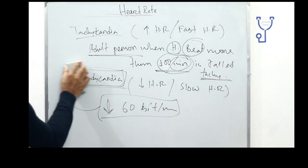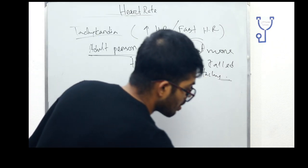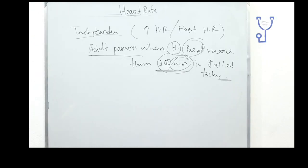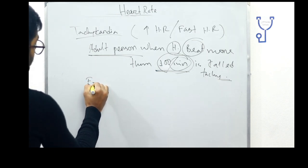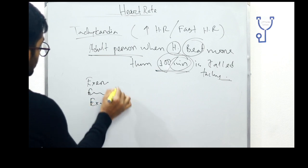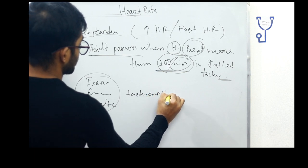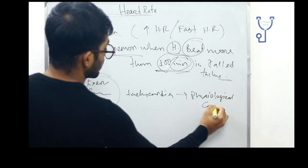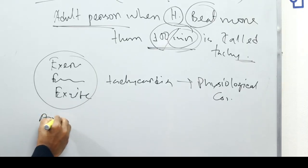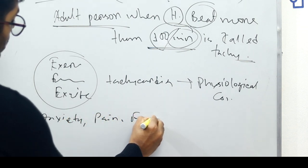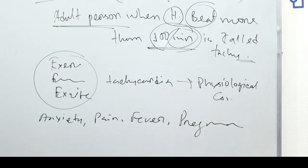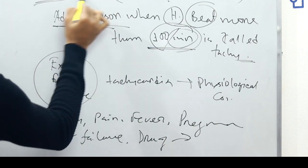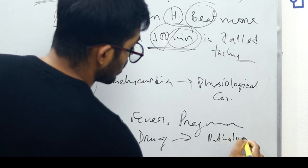There are two conditions for tachycardia: physiological and pathological. In physiological conditions, exercise, emotion, and excitement can cause tachycardia. In pathological conditions, anxiety, pain, fever, pregnancy, heart failure, and some drugs can cause tachycardia.